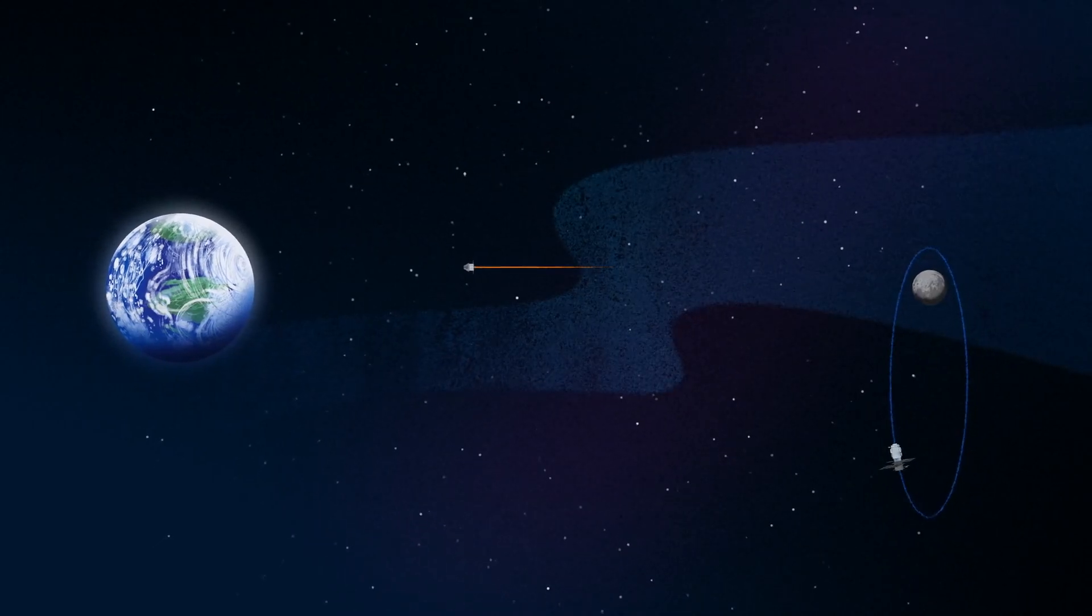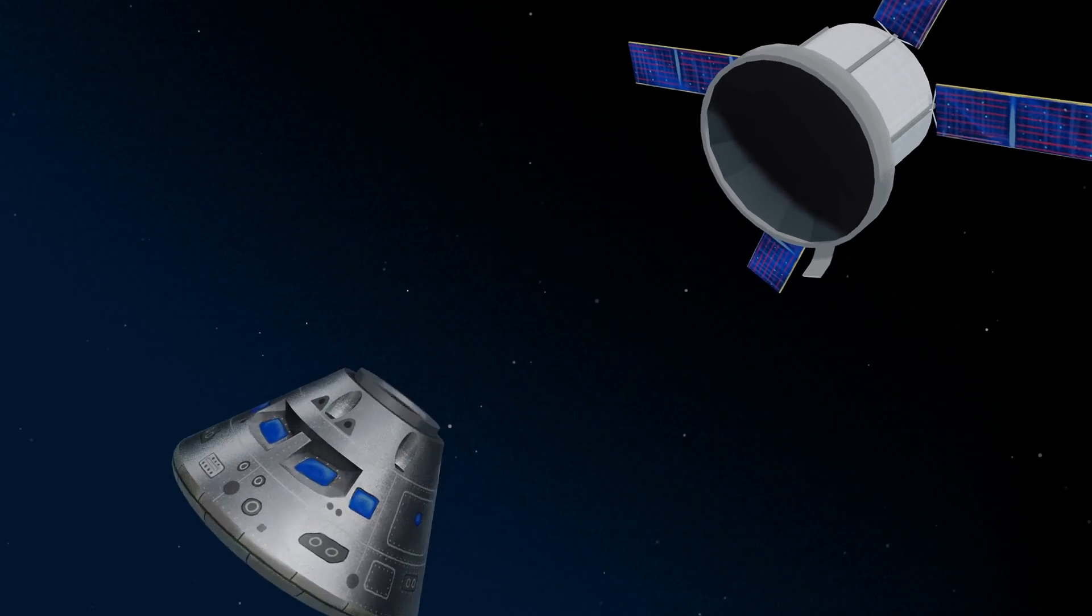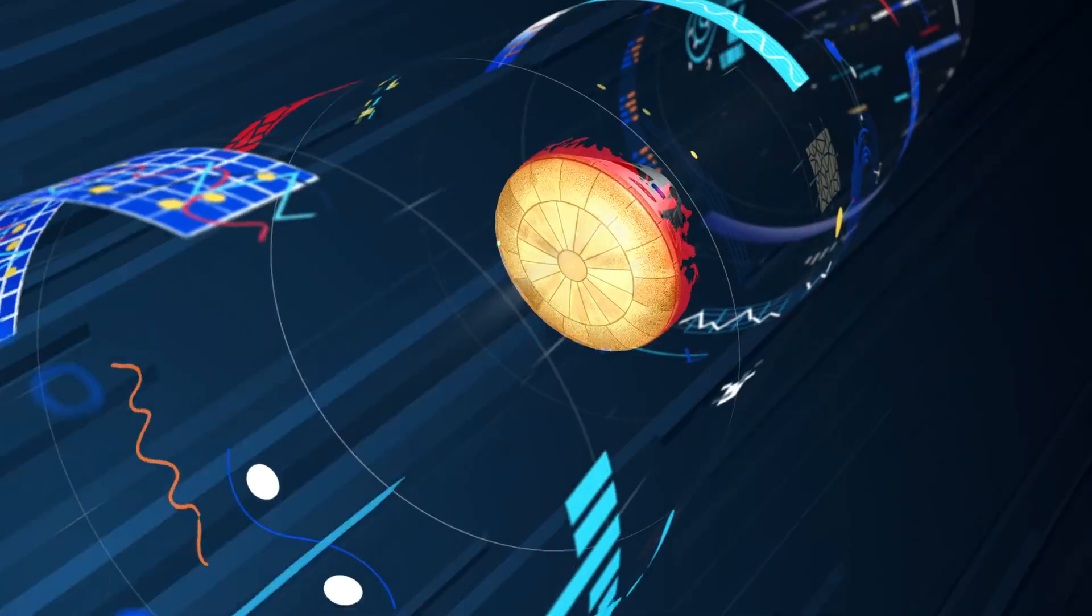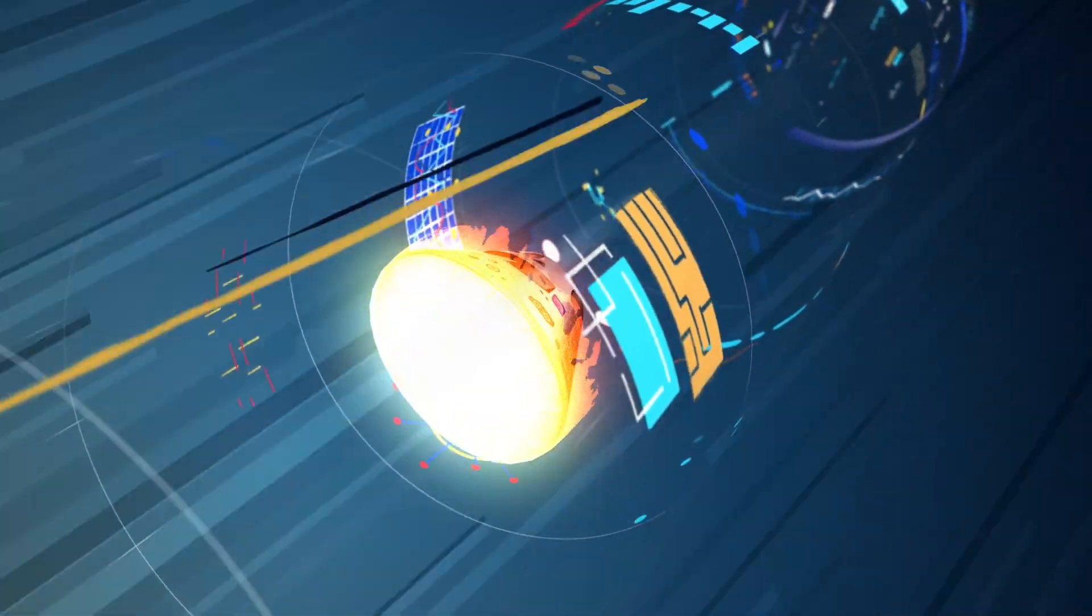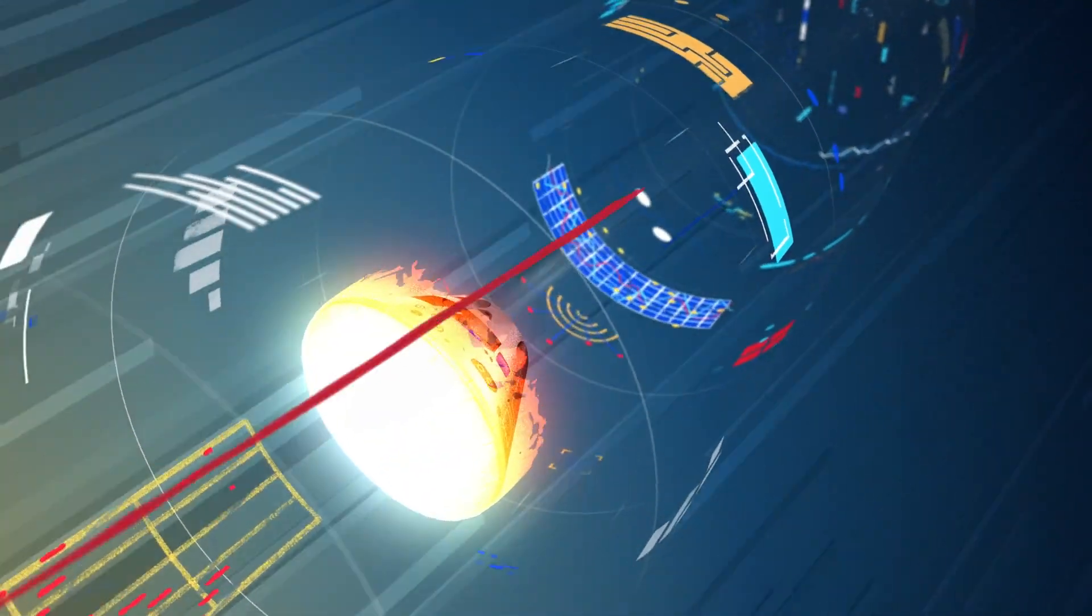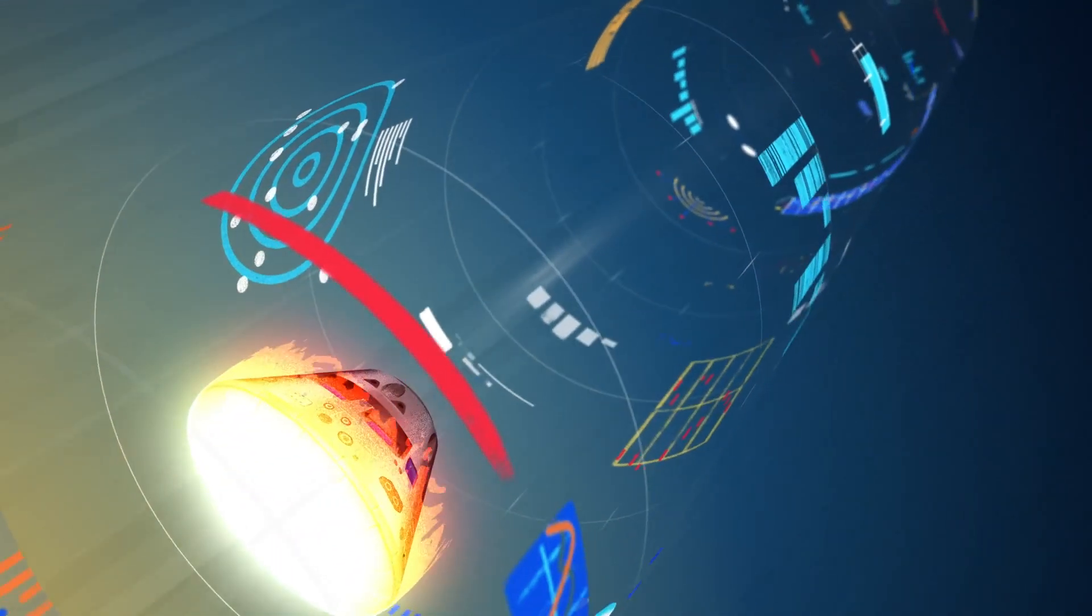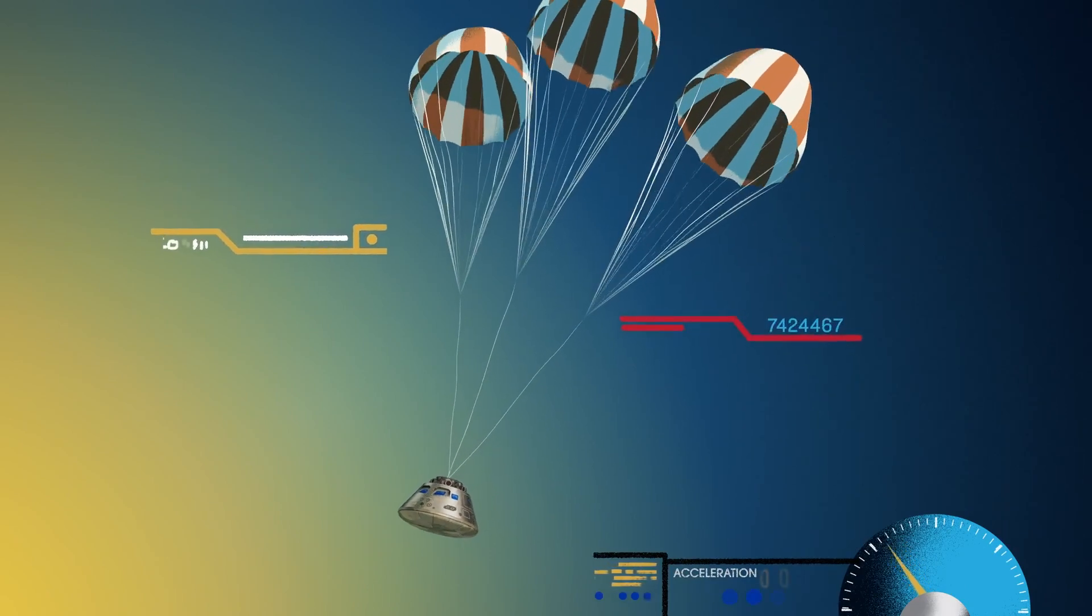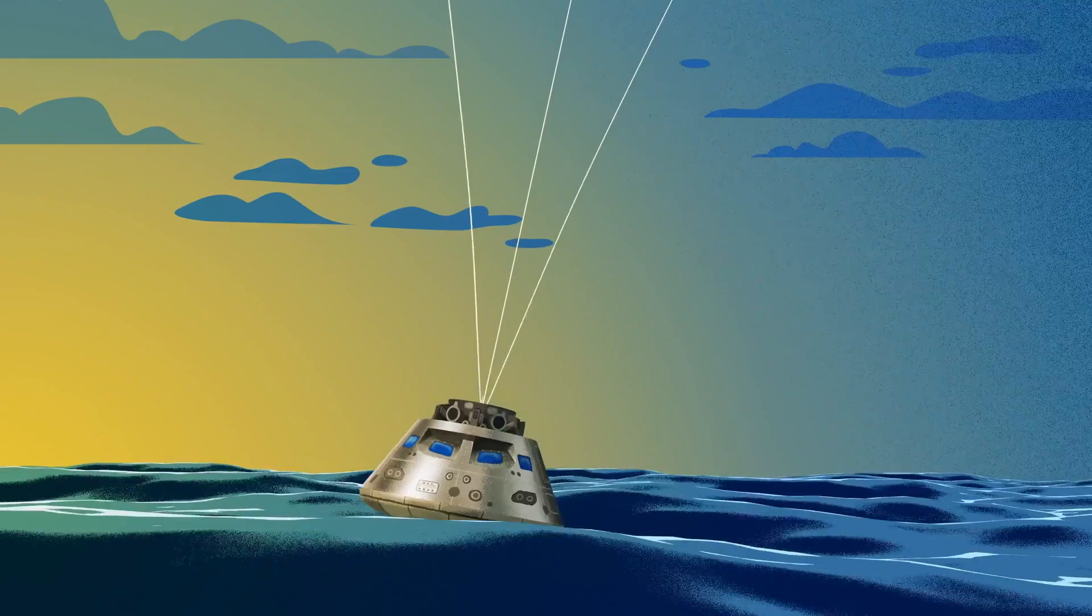As they near the end of this journey, the service module is released, and the crew module is oriented heat shield first. Entering Earth's atmosphere at 25,000 miles per hour, the friction of air slows Orion considerably, while also subjecting it to temperatures of 5,000 degrees. With the Orion now at just 300 miles per hour, a series of parachutes uniquely tested and produced for this moment deploy, decelerating the craft to just 20 miles per hour for splashdown.